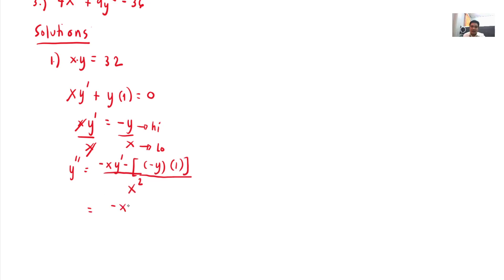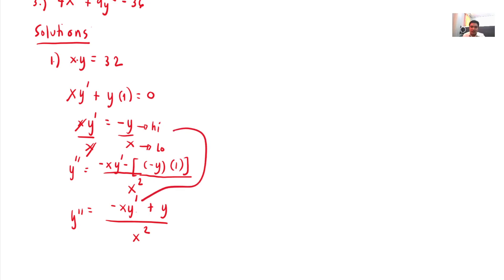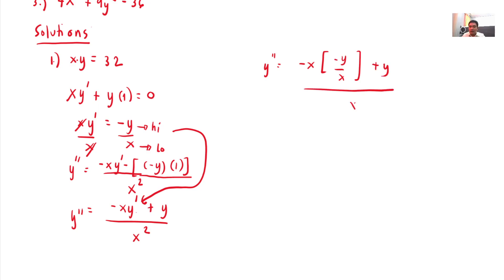We simplify: that is negative x·y prime — negative negative becomes positive — plus y, all over x squared. Now, the answer should be in terms of x and y only. However, we have y prime here, so we substitute the value of y prime, which is negative y all over x. So y double prime is equal to negative x times negative y all over x, plus y, all over x squared.